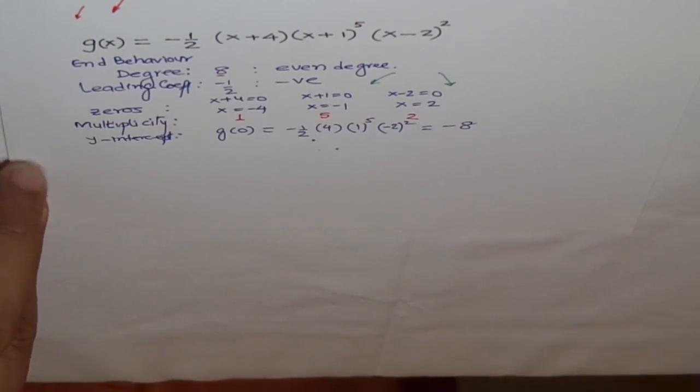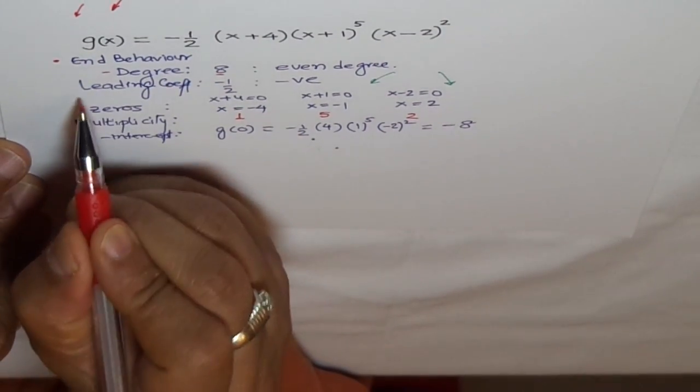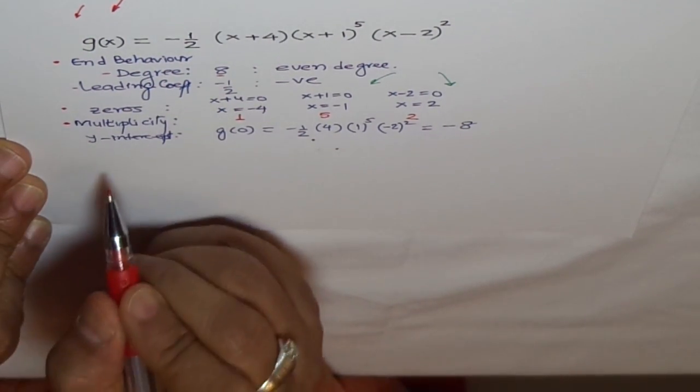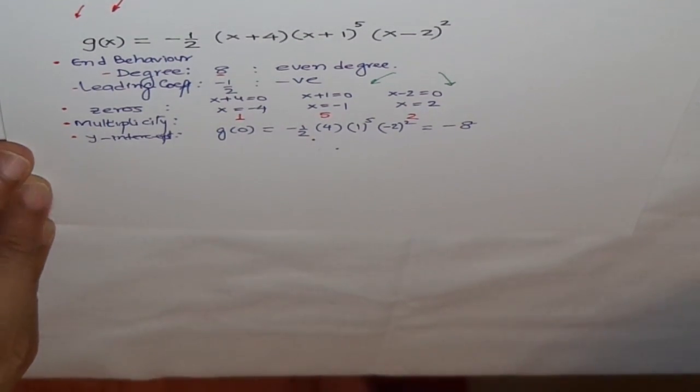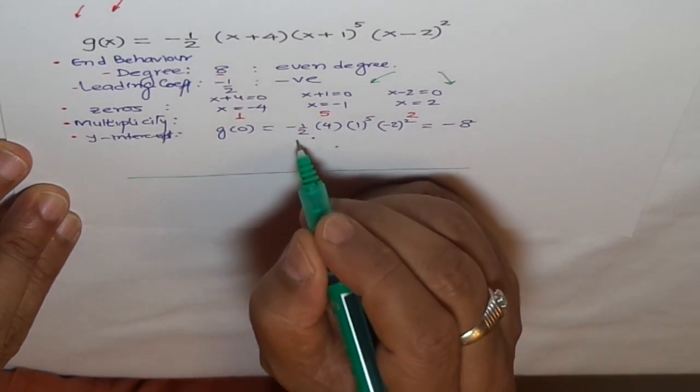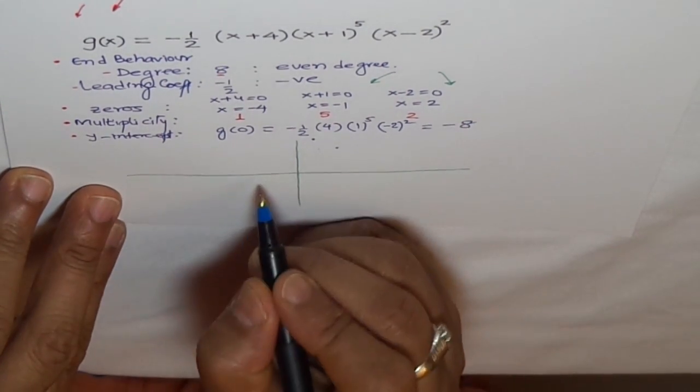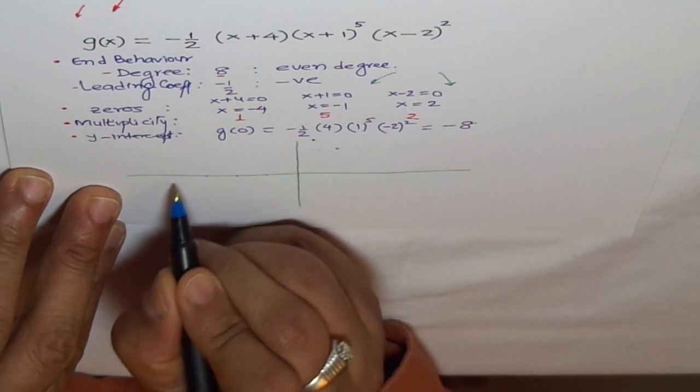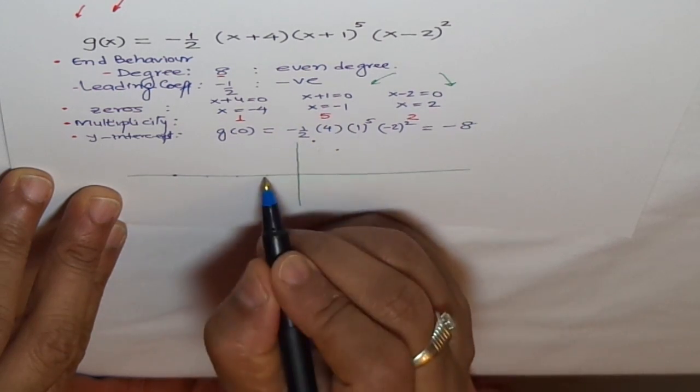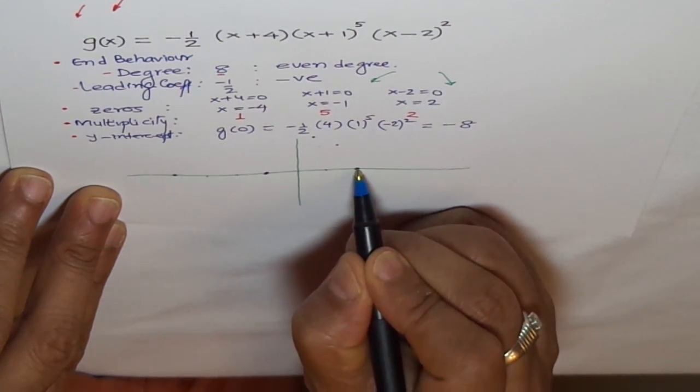Now with all this information, which is enough to sketch - end behavior because of degree and leading coefficient, zeros and their multiplicity, and y-intercept - let's sketch it. We'll draw a line. Now mark our zeros. Where are the zeros? x equals minus 4, this is 1, 2, 3, 4. Then x equals minus 1. And then x equals 2.